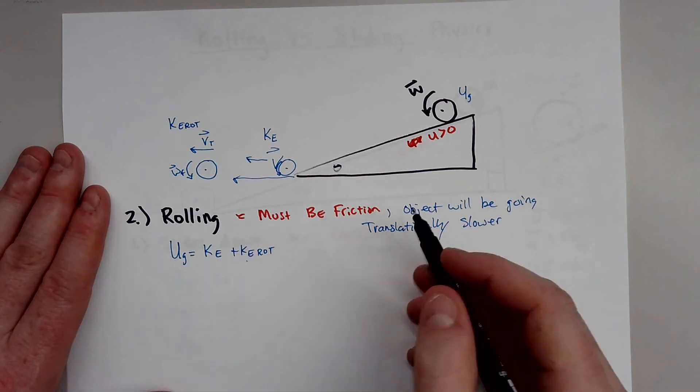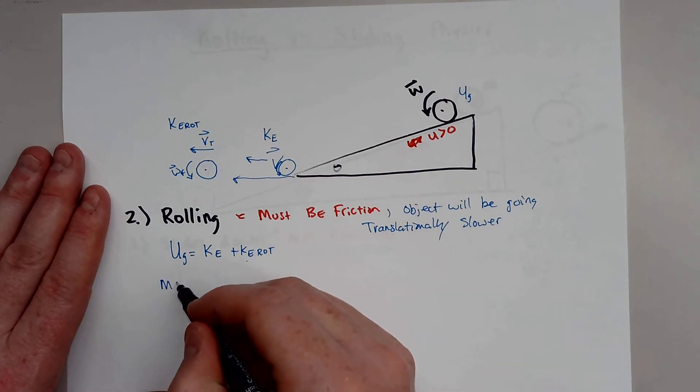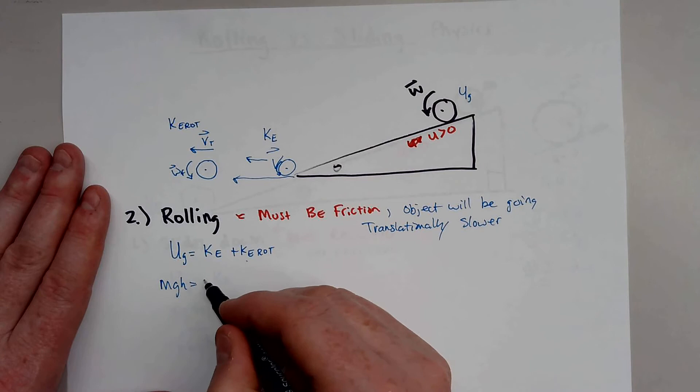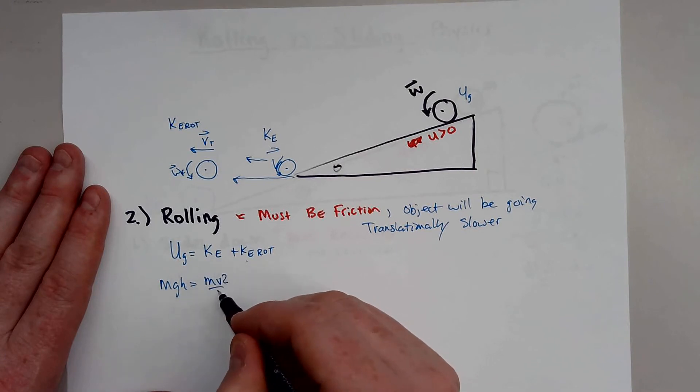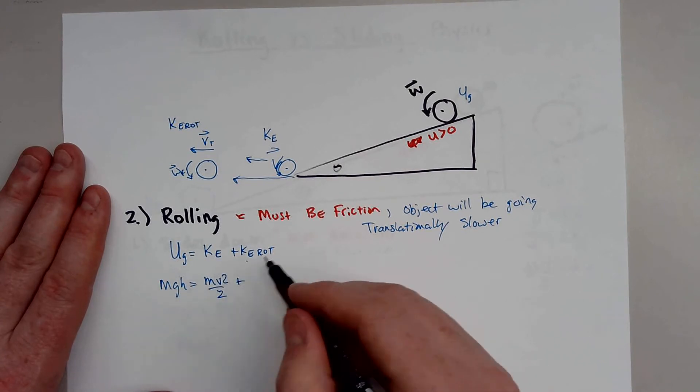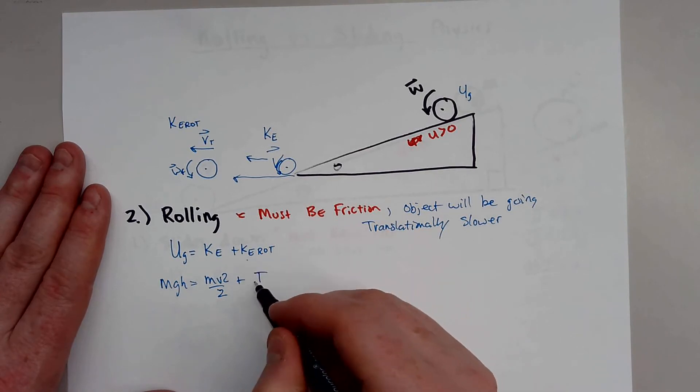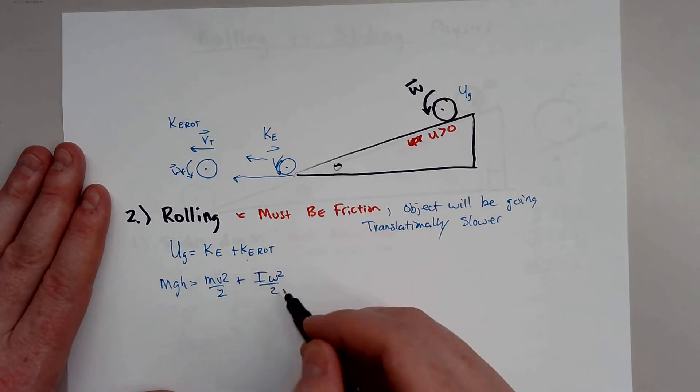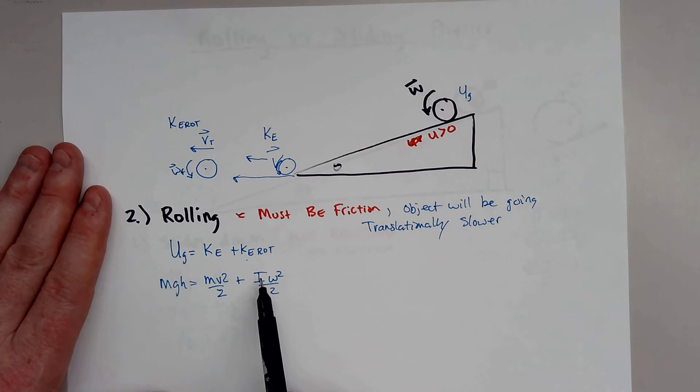So solving for this, you'd actually get this. You'd actually have mgh is equal to mv squared over 2 plus the kinetic energy rotation is actually i omega squared over 2. Remember, i is just rotational mass, and omega is just angular velocity.